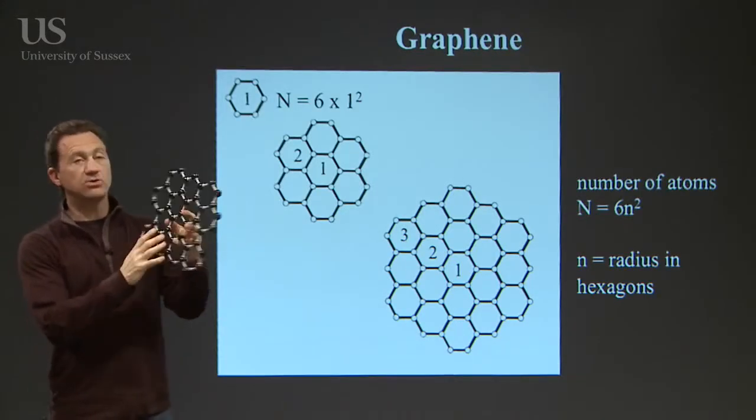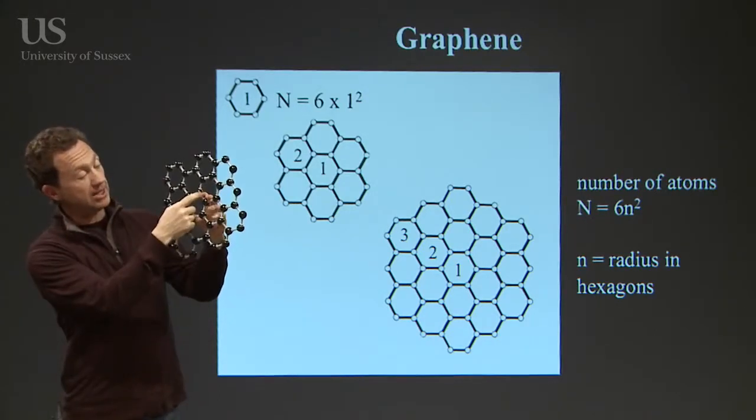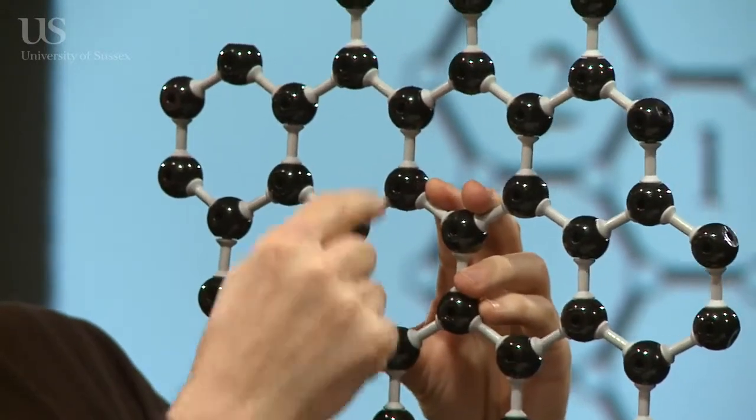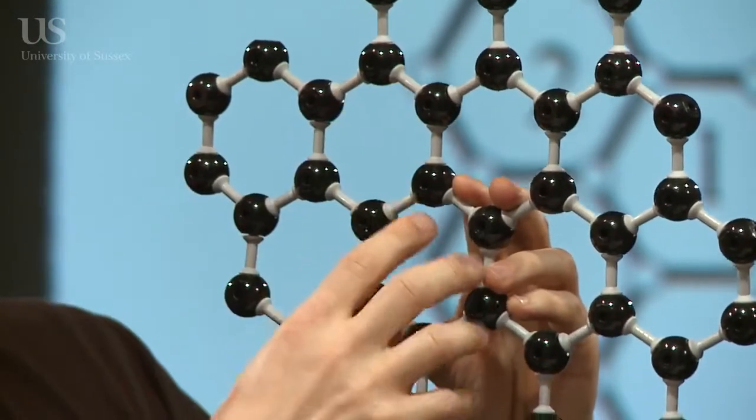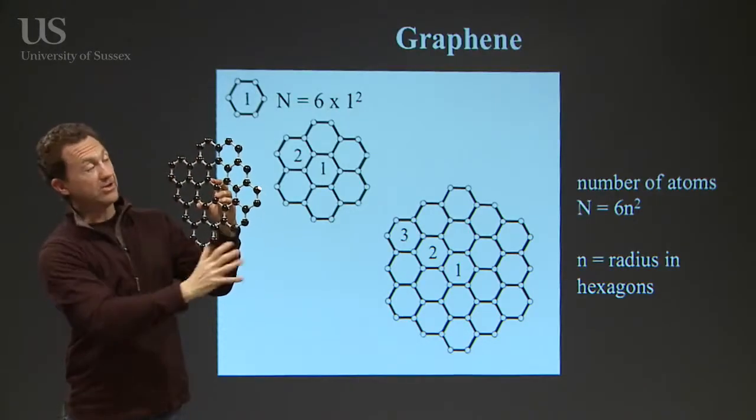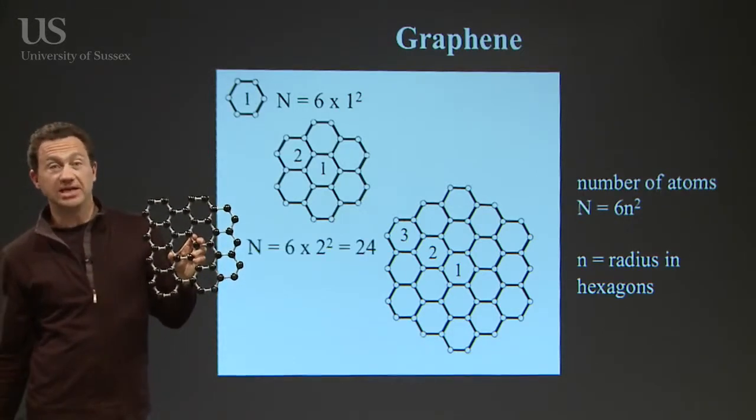It has some very interesting properties. Let's talk a little bit about the maths. It turns out that the number of atoms in the structure is given by a very simple rule, 6n squared. The number of concentric rings squared times 6 will give you an idea of how many atoms there are in a hexagon sheet of graphene. More of that on another video.